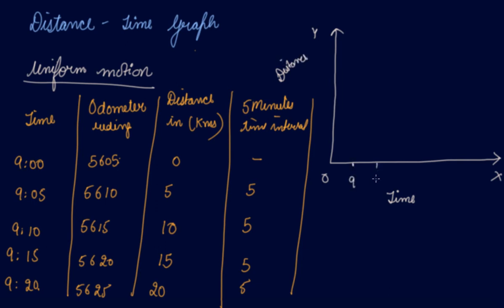On the x-axis we mark 9am, 9:05am, 9:10am, 9:15am, and 9:20am. On the y-axis we mark distances: 5, 10, 15, and 20 kilometers.